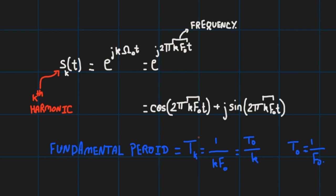So s₁(t) has fundamental period T₀/1, that is T₀. s₂(t) has fundamental period T₀/2, s_k(t) has T₀/k, and so forth.